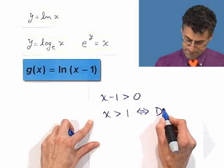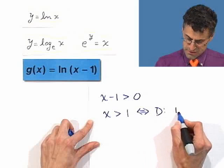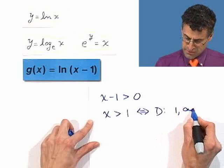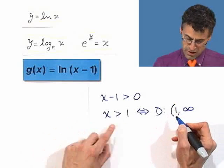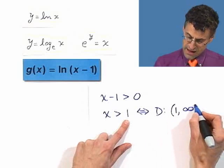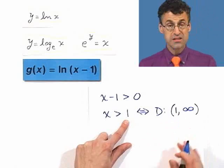Which I could write that in a different way by saying, the domain, all the values beyond 1 going to infinity. And I do not include 1, because I have to be strictly bigger than 1, and I do never include infinity. So that's the domain.